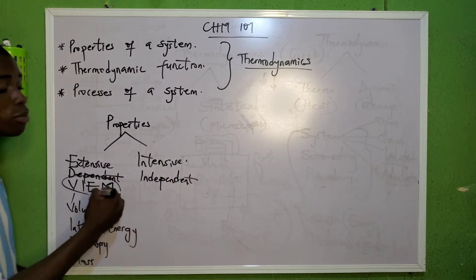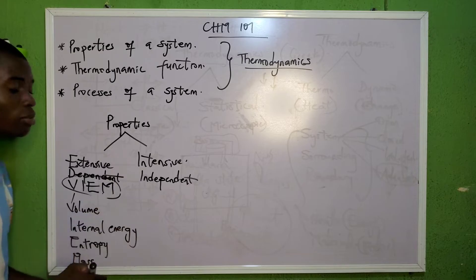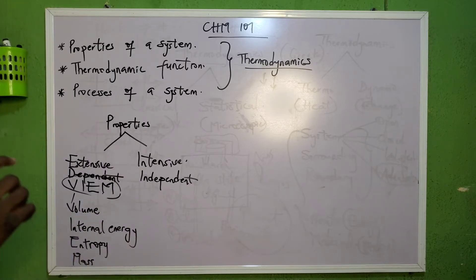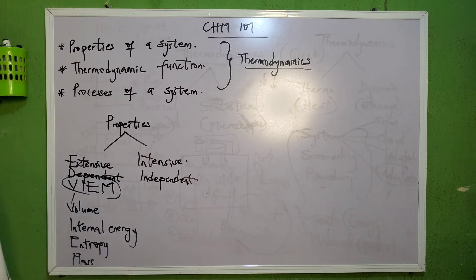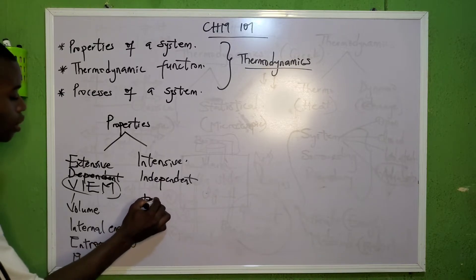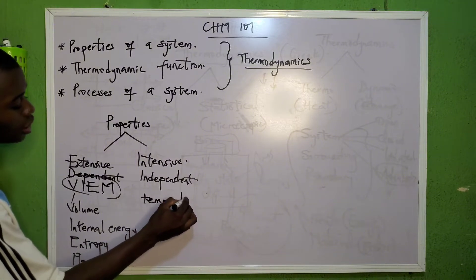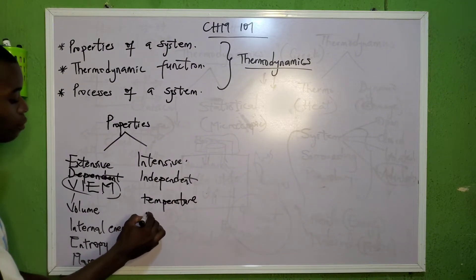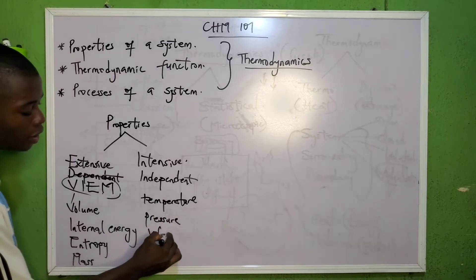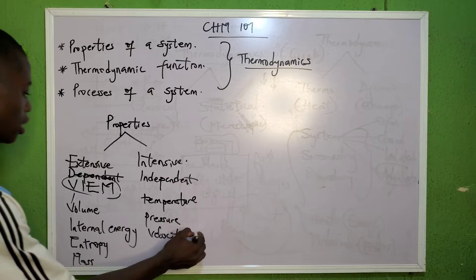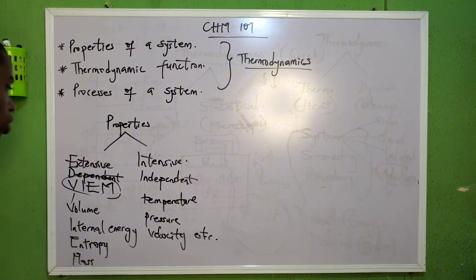Any property apart from the ones mentioned — we refer to as intensive properties. Intensive property is also the same as internal property. Examples include temperature, pressure, velocity, and others. These are examples of intensive properties, while VIEM are examples of extensive properties.